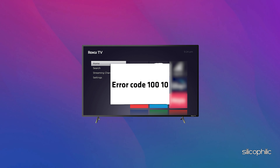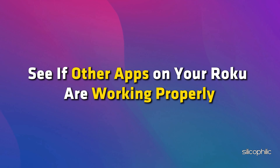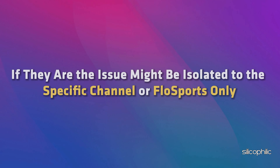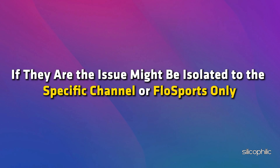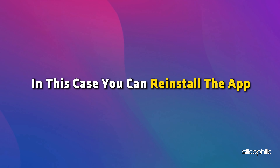Method 4: Check other Roku channels or apps. When you get error 100, 10 on a specific Roku app, see if other apps on your Roku are working properly. If they are, the issue might be isolated to the specific channel or Flow Sports only. In this case, you can reinstall the app.